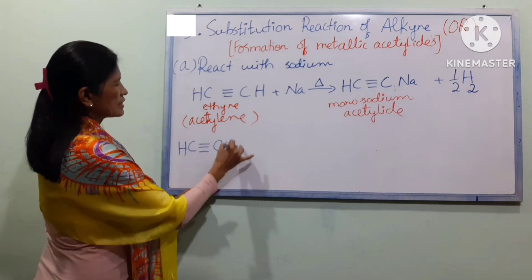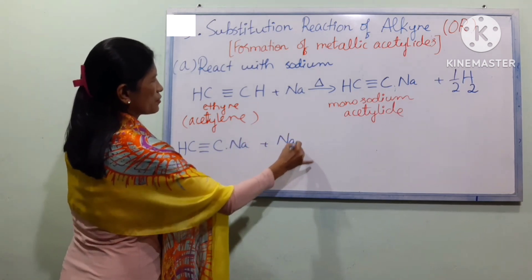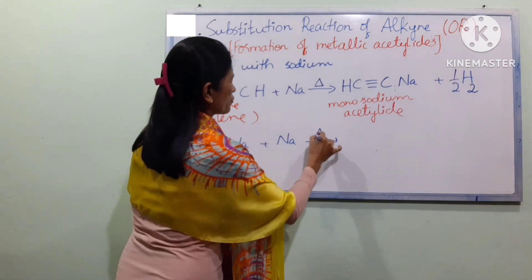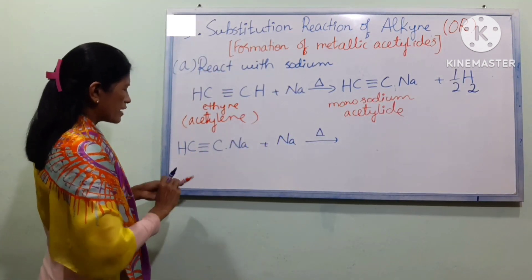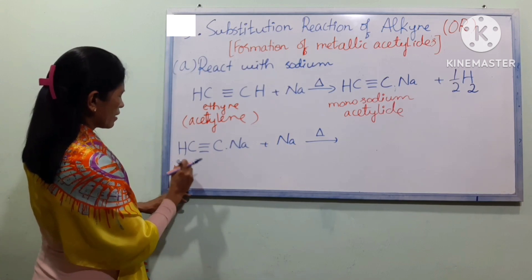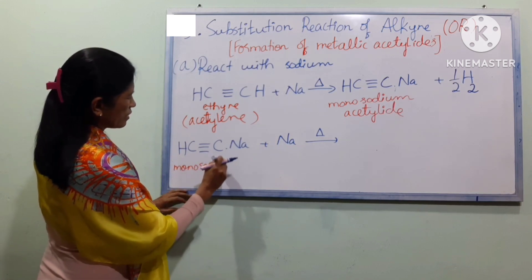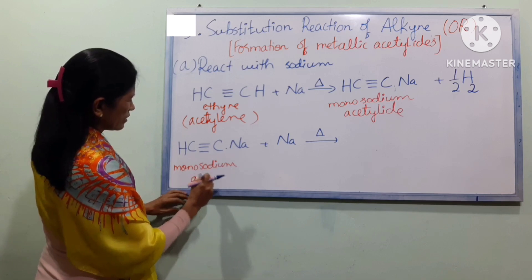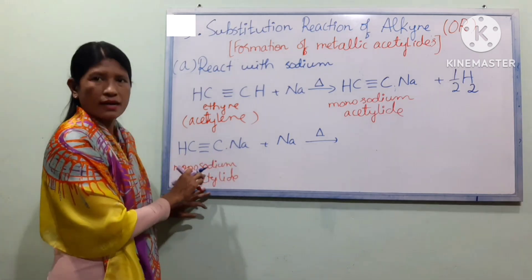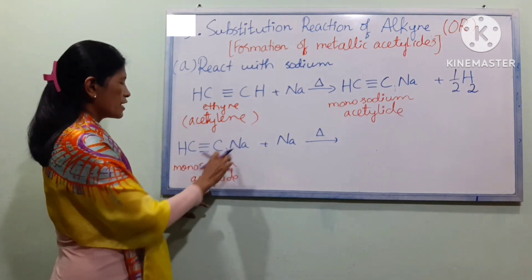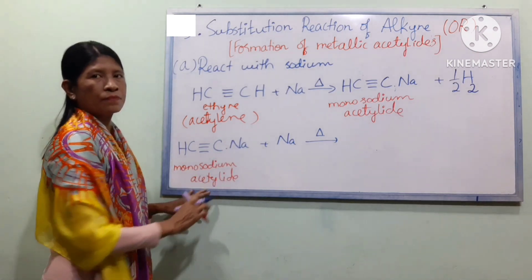HC triple bond C-Na. Plus Na is on top. Monosodium acetylide. Acetylide is a metal. If you want to use Na, monosodium acetylide.